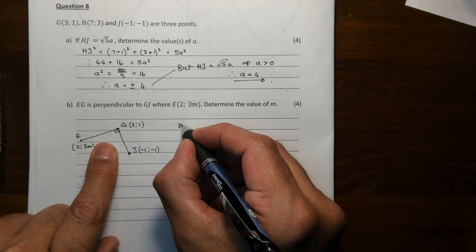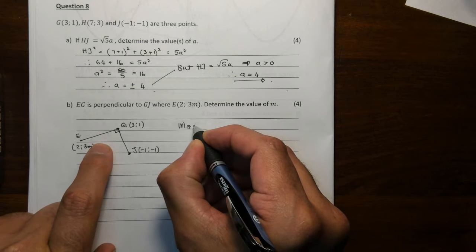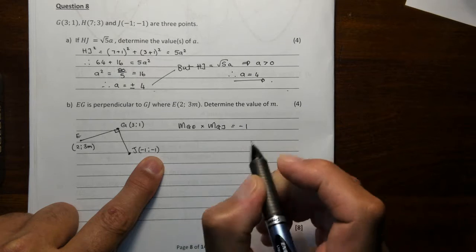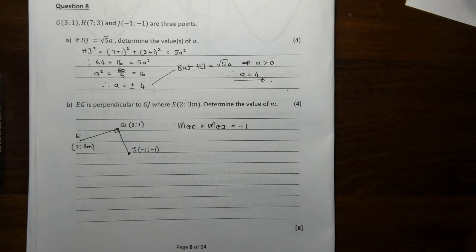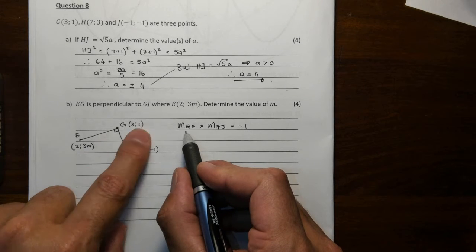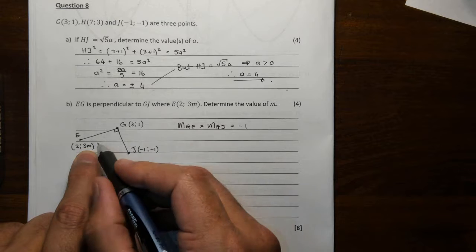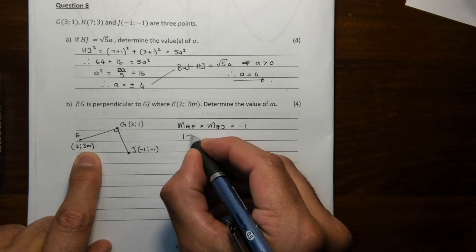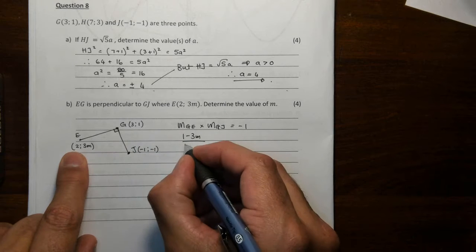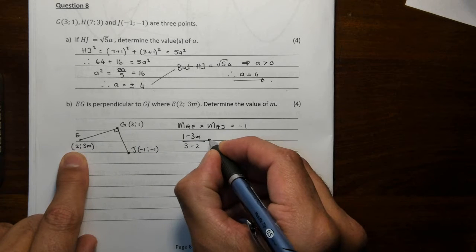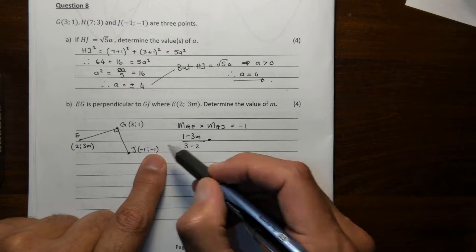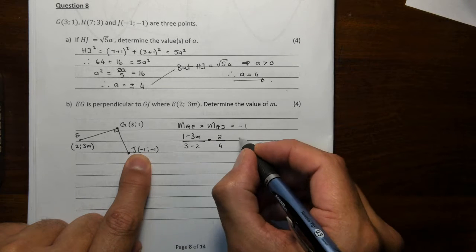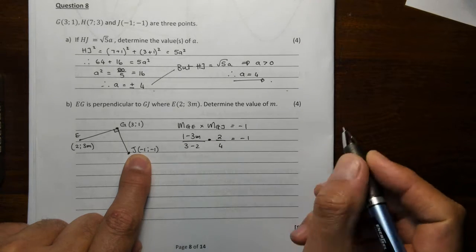Because they're perpendicular, the gradient of GE multiplied by the gradient of GJ has to be minus 1. That is the rule that you use for perpendicular lines. So that gradient, 1 minus 3M, they're asking us to find M. That M doesn't represent meters. So 1 minus 3M over 3 minus 2 multiplied by 1 minus minus 1 is 2, it's 1 plus 1, and 3 minus minus 1 is 4, that must give you minus 1.